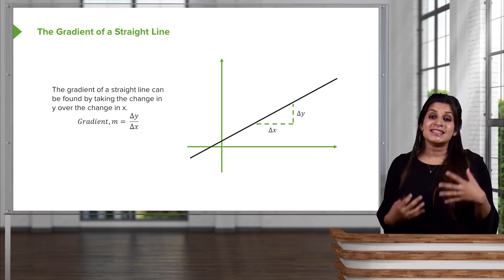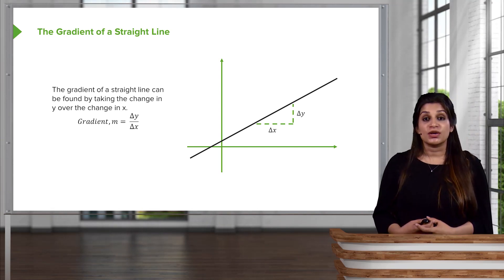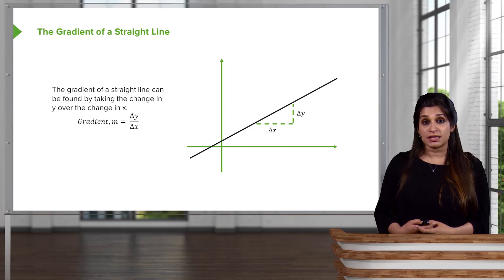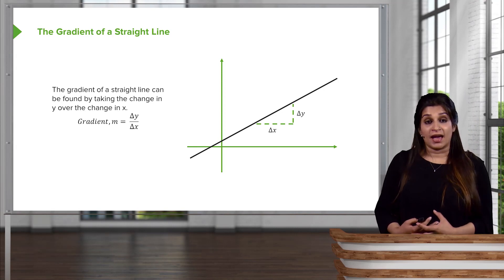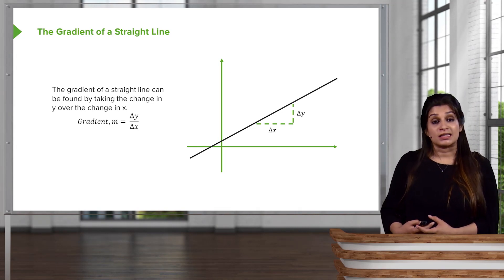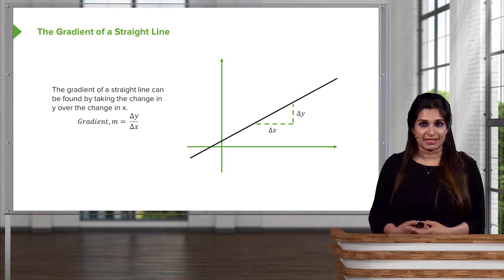You're measuring the steepness or the gradient of any type of surface that is tilted. So you're looking at how the y-axis changes divided by how the x-axis changes. We sometimes call this gradient m and we use the notation delta y over delta x, or change in y over change in x.